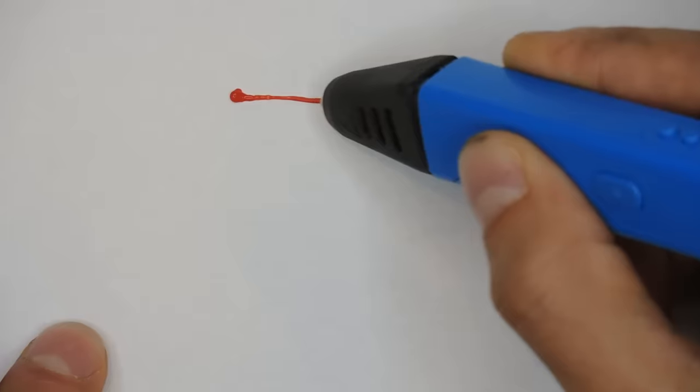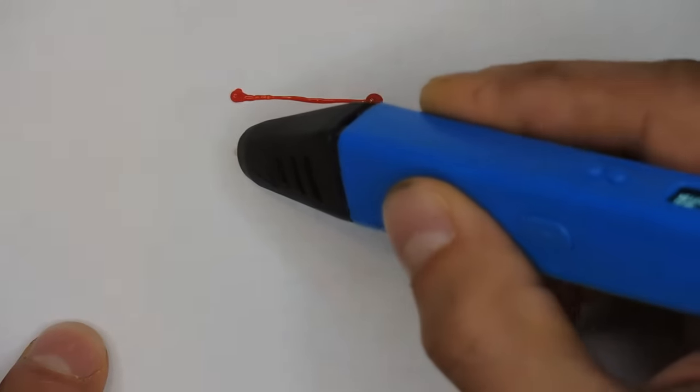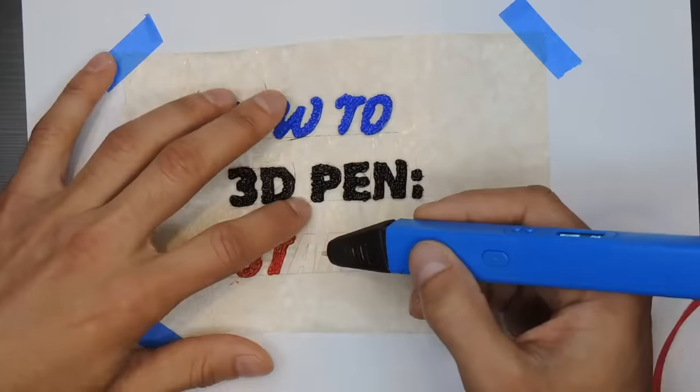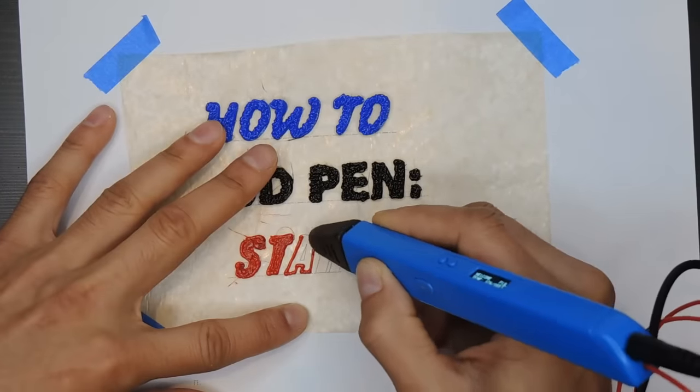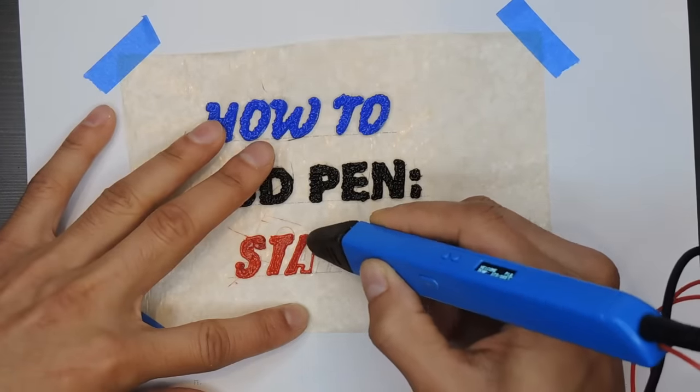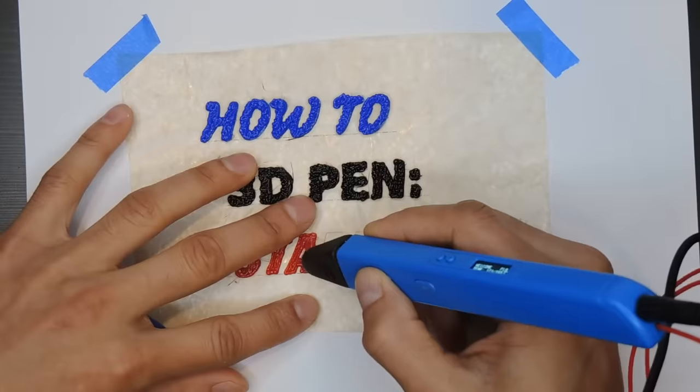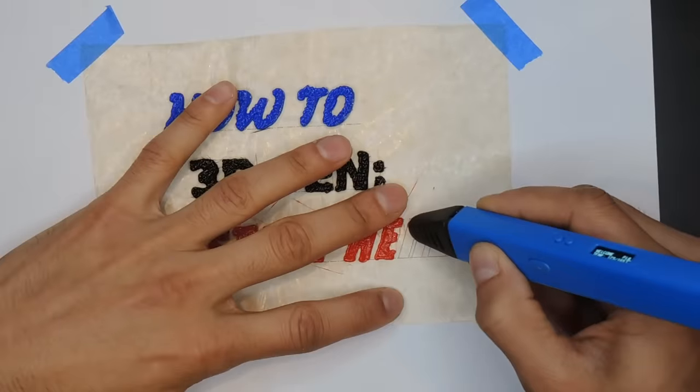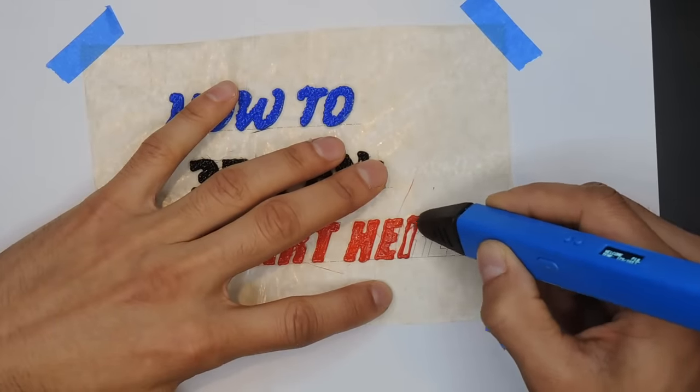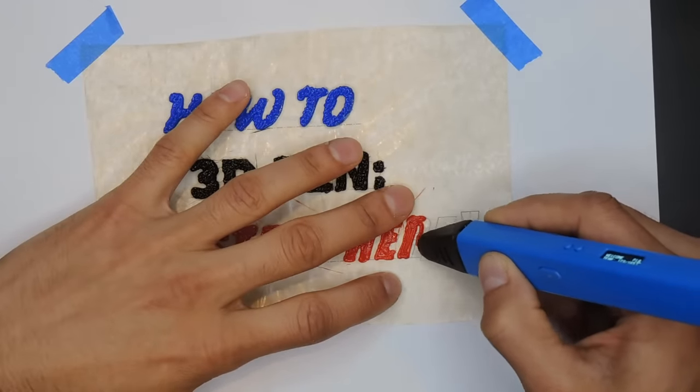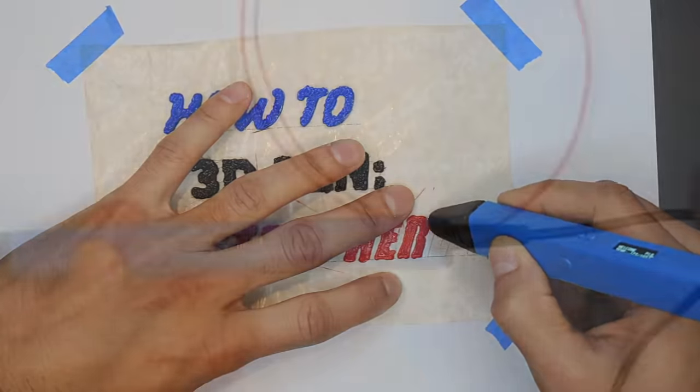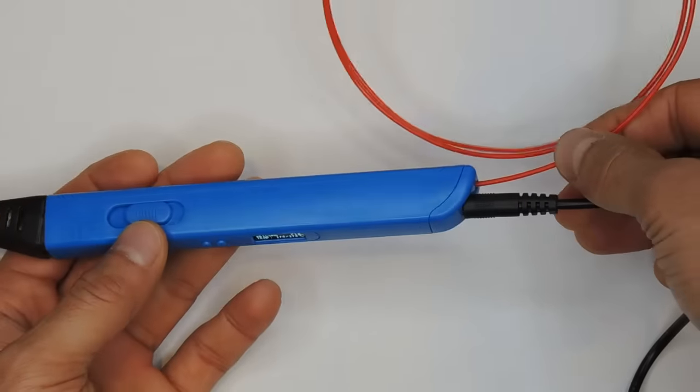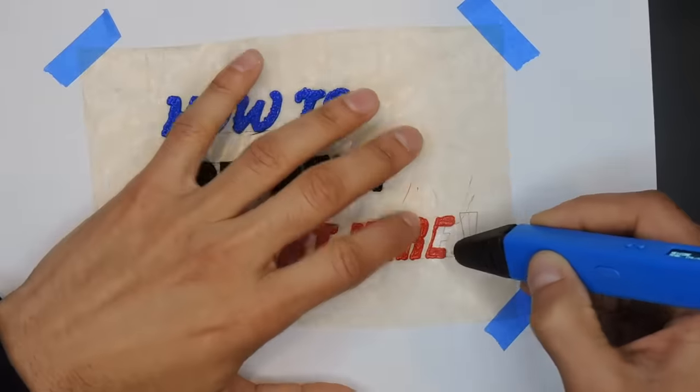When you're penning, the filament does not stop extruding immediately after you stop pressing the forward button. So it really helps to anticipate when you need to stop penning and release the forward button 1-2 seconds ahead of time. Finally, always unload your filament when you're done using your pen for the day. This will help prevent clogging or jamming of the pen during the next use.